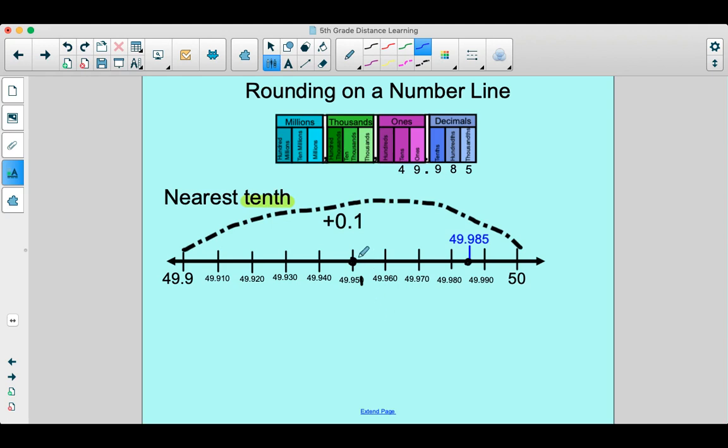All right. So we can clearly see it's going to fall to the right of the midpoint. So 49 and 985 thousandths is closer to 50 than it would be way over there, right? It's obviously much closer to 50.